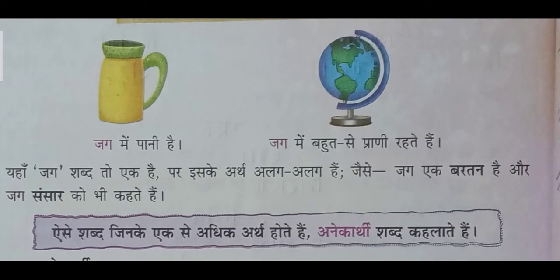Toh dekhiye, yahan ek taraf mein likha gaya hai 'jag' aur doosara phir se hai 'jag'. Toh Anek Arthi Shabd ka matlab hota hai aise shabd jinका alag-alag matlab ho. Jaise 'jag' mein paani hai, 'jag' mein bohot se praani hain. Yahan dono 'jag' dikhaye gaye hain — jinki uccharan ya likhne ka tarika dono hi samaan hai, lekin unka matlab bhinn-bhinn hai.